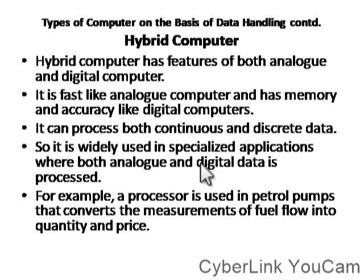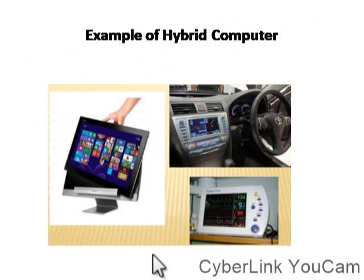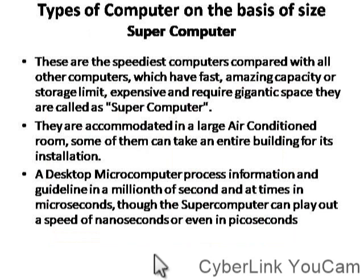Hybrid computers have features of both analog and digital computers. They are fast like analog computers and have the memory and accuracy of digital computers. They can process both continuous and discrete data and are widely used in specialized applications. For example, a processor used in petrol pumps converts the measurement of fuel flow into quantity and price — that is a hybrid computer. In specialized cases, such as in our cars, we use hybrid computers when we need features of both analog and digital.